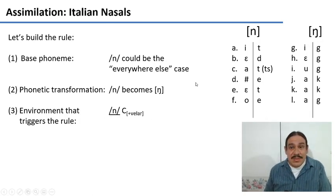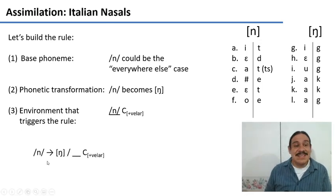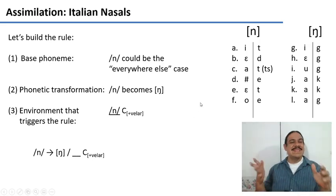This environment would trigger a rule that would look something like this. An n becomes a velar engma, a velar nasal, whenever you see the n and a velar consonant like a g or a k. So what is happening here?